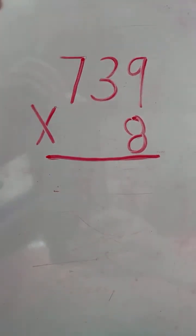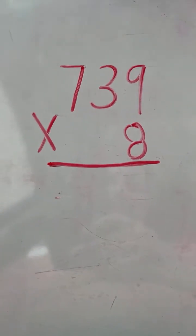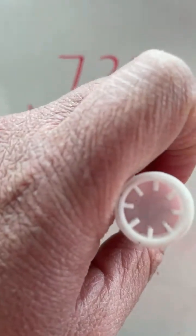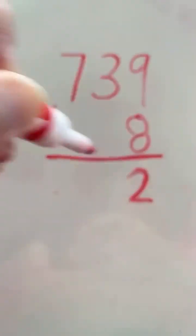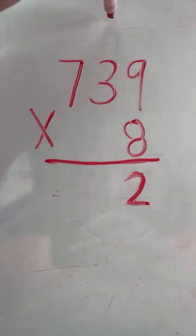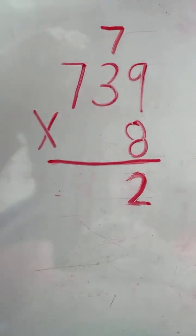So we start in the ones place. 9 times 8 equals 72. The 2 in 72 goes into the ones place. The 7 in 72 gets carried over to the tens place.